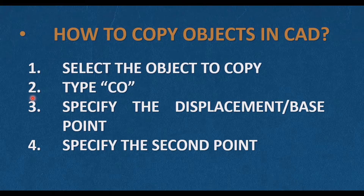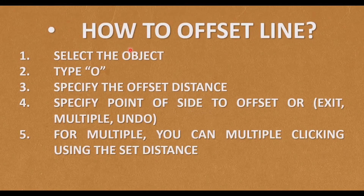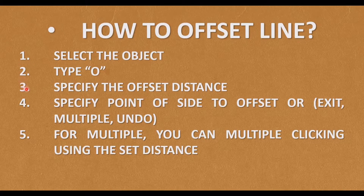Copy. How to copy objects in AutoCAD: First, select the object to copy. Type CO, then specify the displacement or base point, then specify the second point.